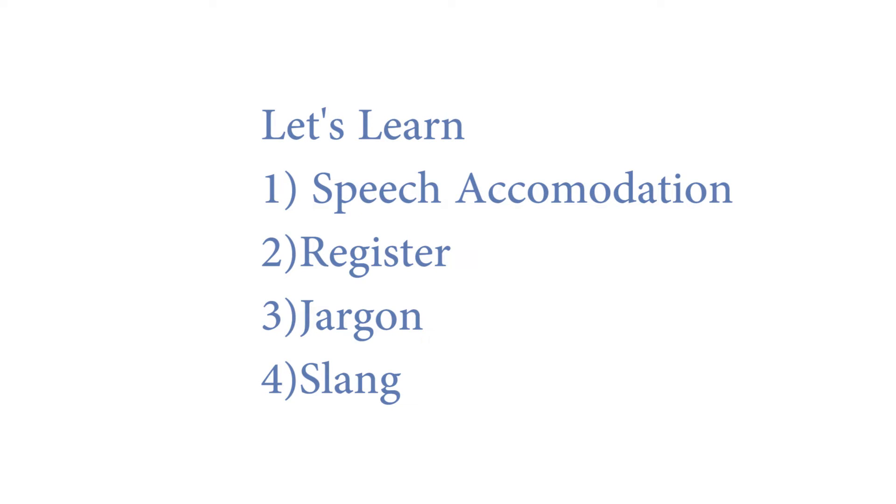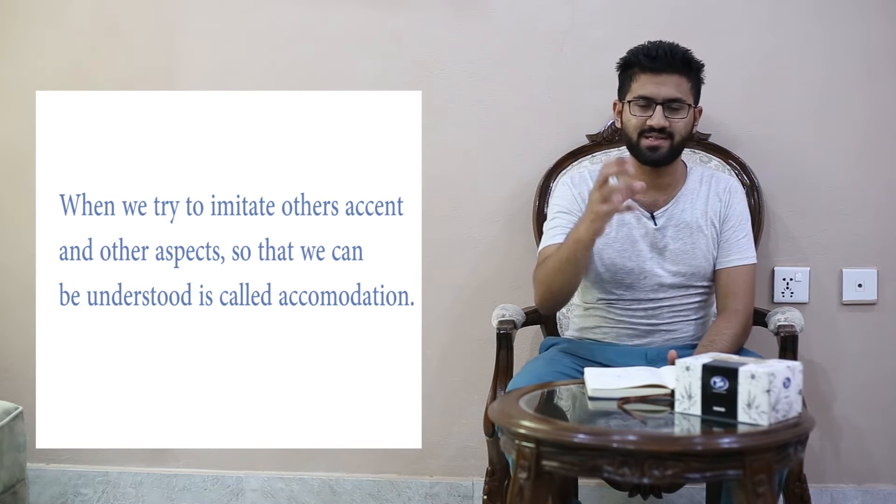The four concepts are: first, speech accommodation; second, register; third, jargon; and fourth, slang. We use language to get ourselves understood by our listeners. The very first concept is all about this phenomenon — speech accommodation. When a speaker adjusts his accent, pronunciation, diction, vocabulary, structure, and even his or her language variety in accordance with its listeners, it is called speech accommodation.